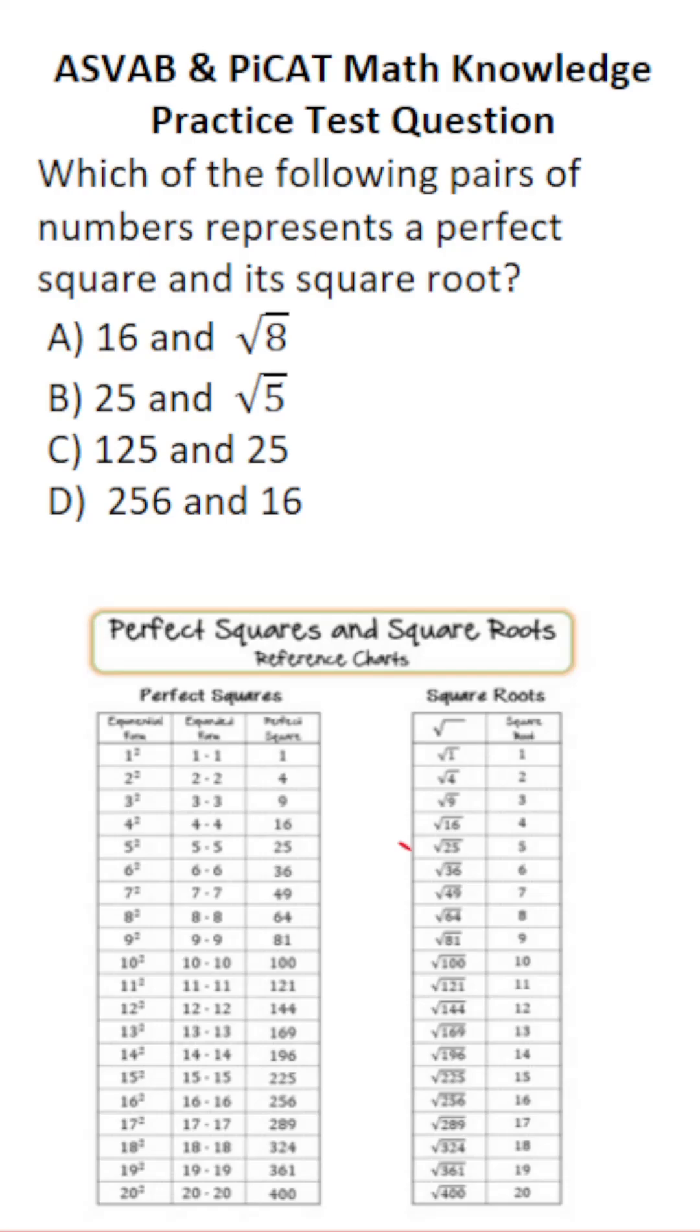This math knowledge practice test question for the ASVAB and PICAT says, which of the following pairs of numbers represent a perfect square and its square root? So in other words, this first number has to be a perfect square, and this second number has to be the square root of that perfect square.